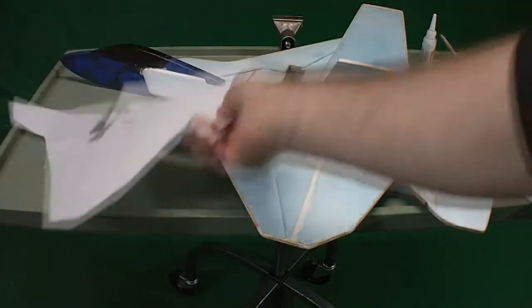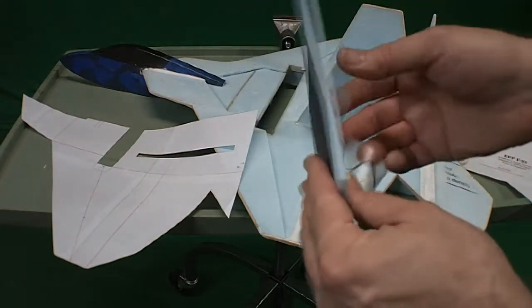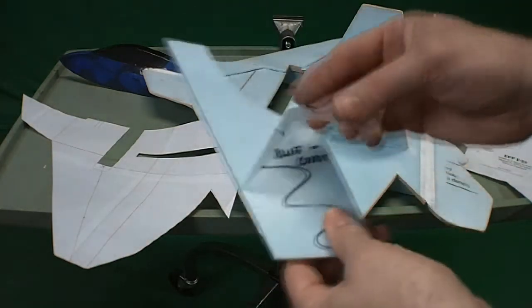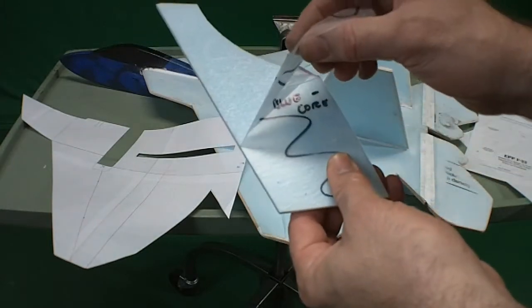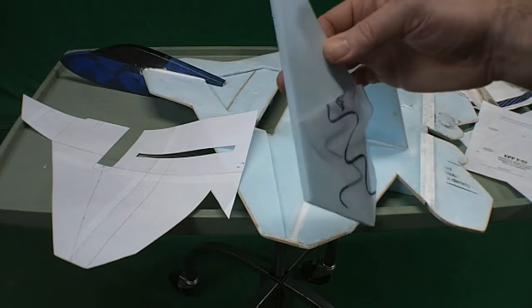I laid the plans against that blue core foam that you get at home improvement centers. The one I have has plastic on one side, which I removed because I wanted to be painting it, so I wanted to have the same texture on both sides.